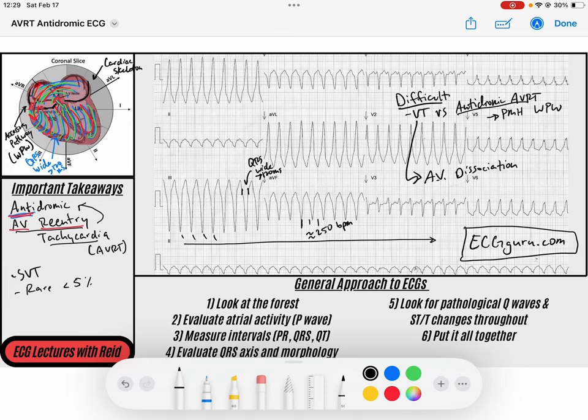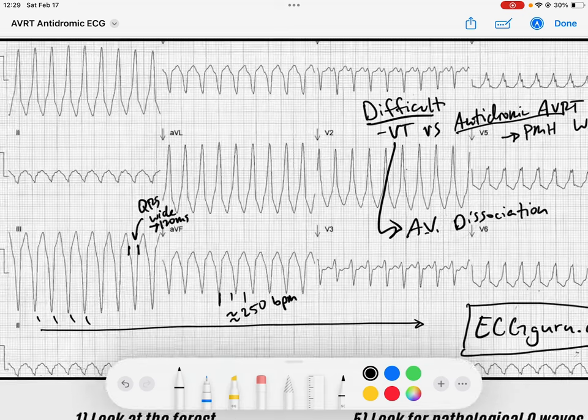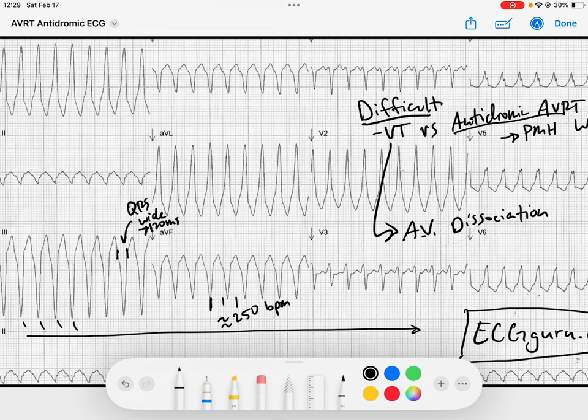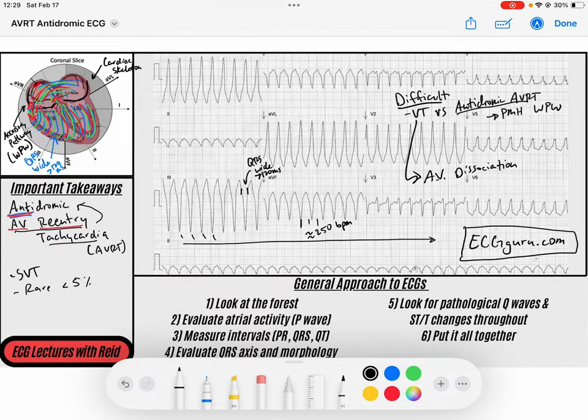And so here we see that we've got this wide complex rhythm. It's very regular. What you can actually do is, this is an advanced concept, but based on the axis of my QRS, upright in my lateral leads - leads I and AVL, V5 and V6 - it tells me that ventricular depolarization is going towards the lateral aspect. It's also negative in my inferior leads, so it tells me it's going away from my negative leads. So you can start to figure out where the accessory pathway might be.